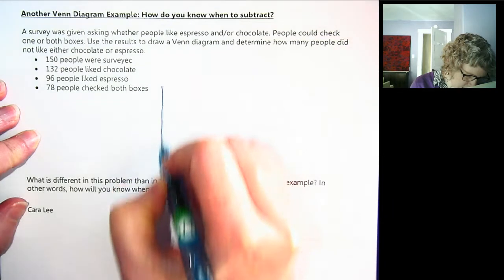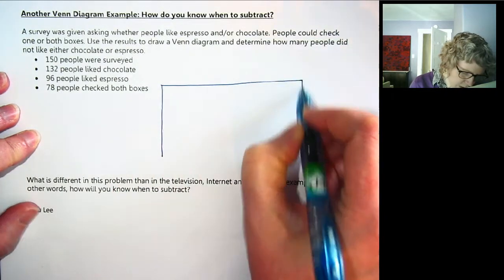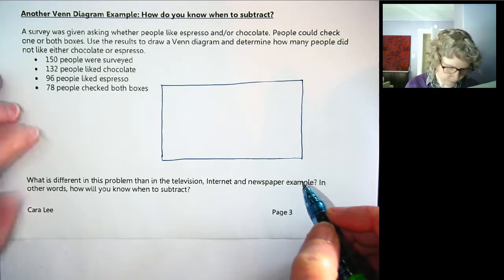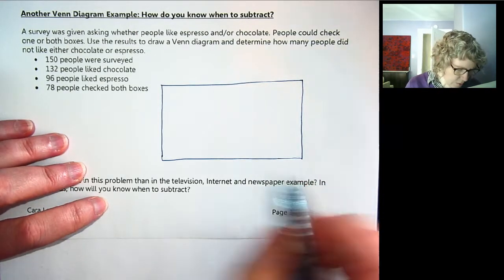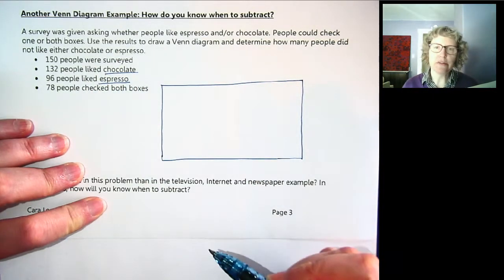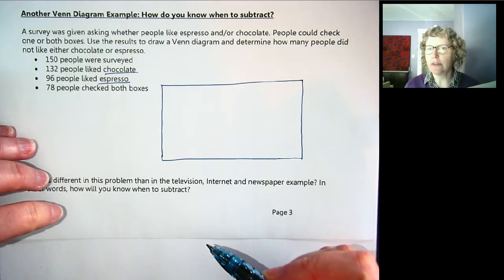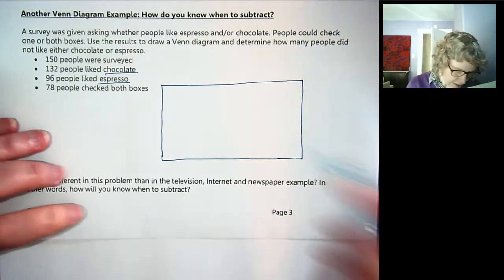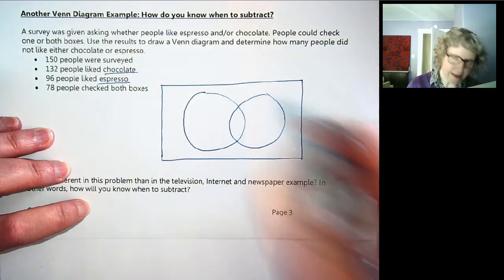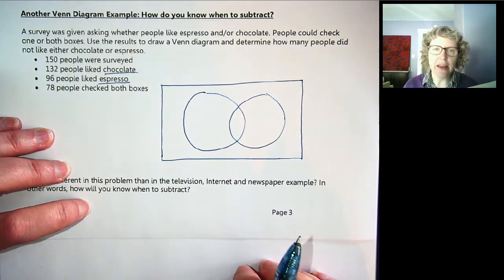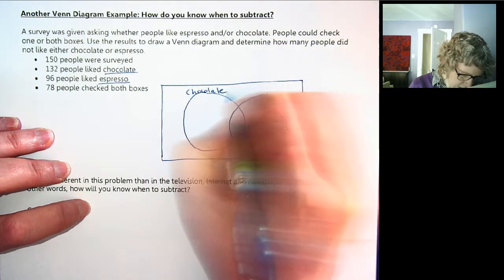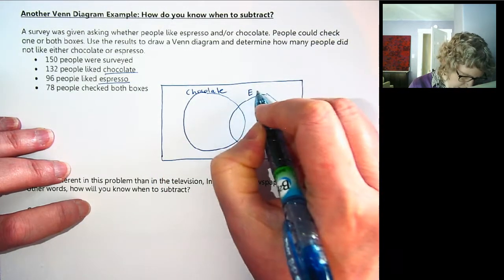Let's draw. Remember we always want to include the box because that represents the universal set. And then here we have just two different things, chocolate or espresso, whereas in the previous one we had three different things with three circles. This one we will have two circles or two sets. Okay, so let's label these. One will be chocolate, liking chocolate, and the other will be liking espresso.